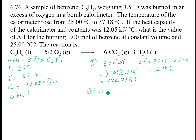Step two is to find the moles, which is mass divided by molar mass. The molar mass of C6H6 is 6 times 12.01 plus 6 times 1.01, which gives me 78.12 grams per mole. This is going to be 3.51 divided by 78.12, and that gives me 0.04493 moles.